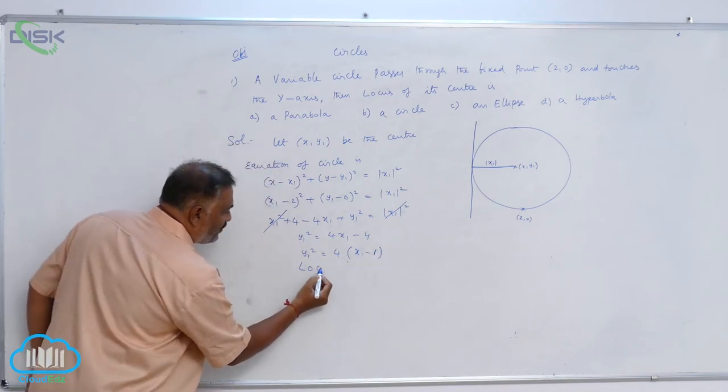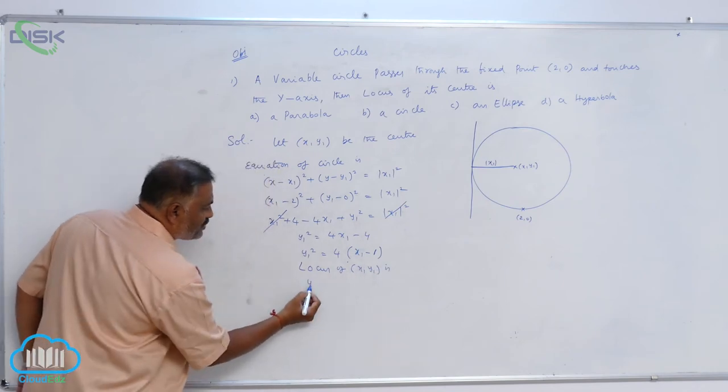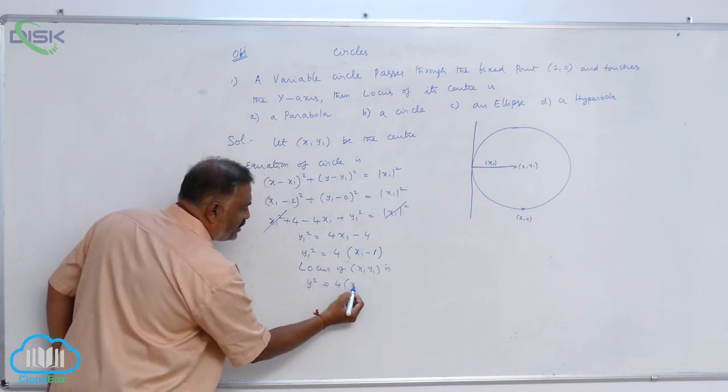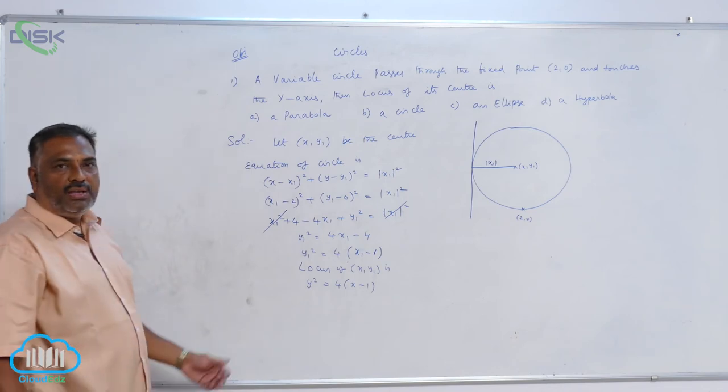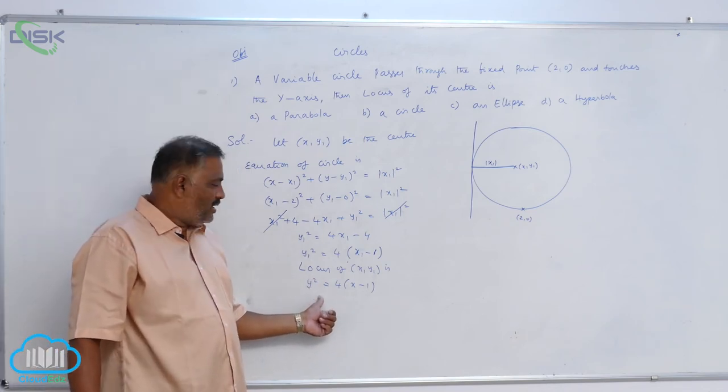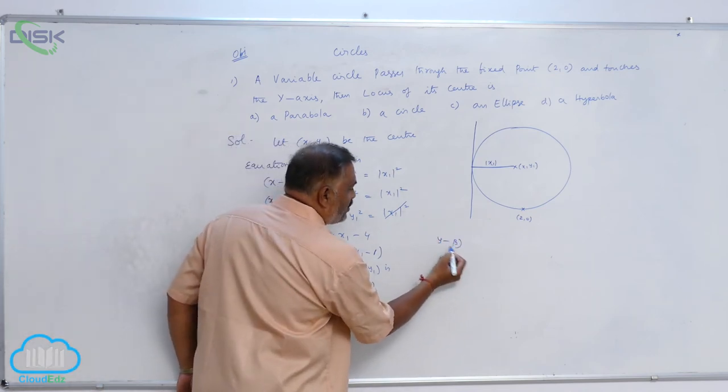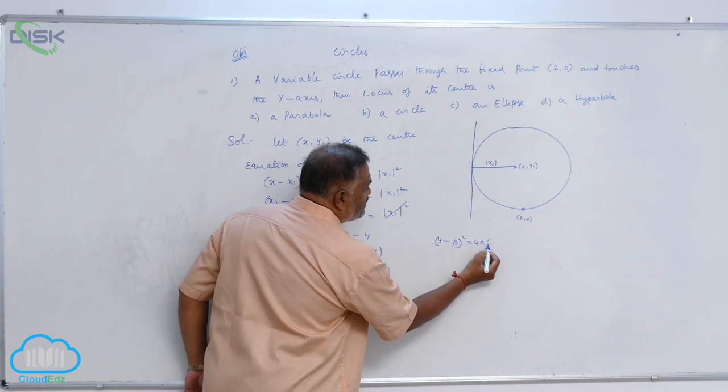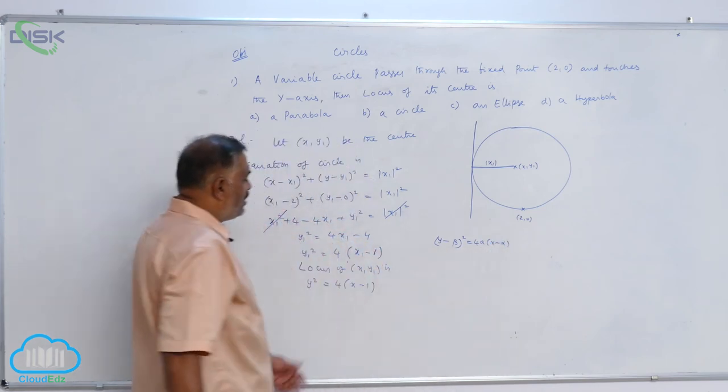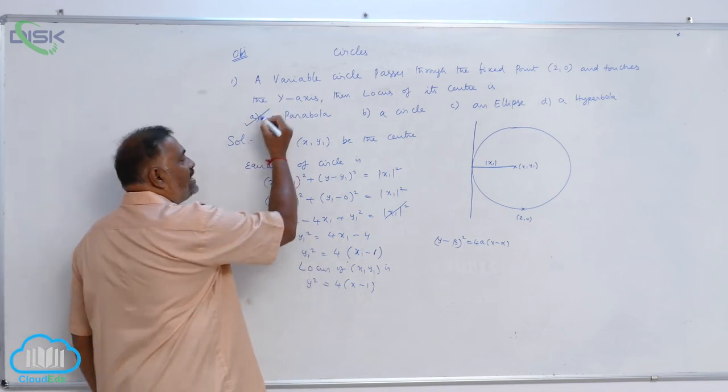Now, locus of (x1, y1) is y² = 4(x - 1). We know that this is nothing but equation of the parabola which is in the format of (y - β)² = 4a(x - α). So, it is obviously a parabola that is why option a is correct.